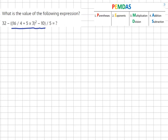What is the value of the following expression? 32 minus 16 over 4 plus 5 times 3 squared minus 10 over 5.